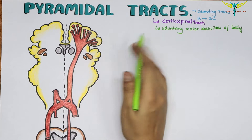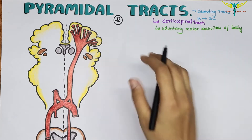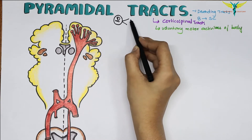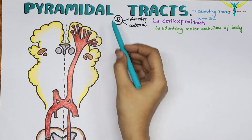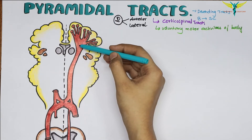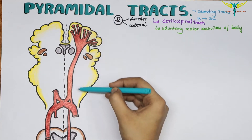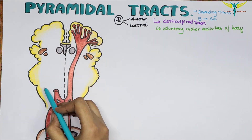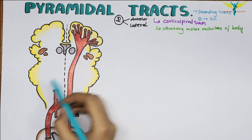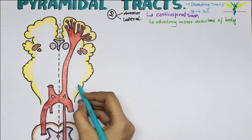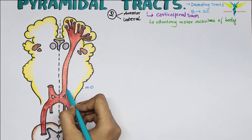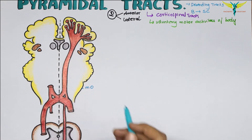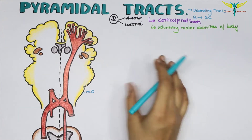There are two pyramidal tracts or corticospinal tracts: the anterior corticospinal tract and the lateral corticospinal tract. They are named pyramidal tracts because while running from the cerebral cortex towards the spinal cord, these two tracts give the appearance of a pyramid on the upper part of the anterior surface of the medulla oblongata. In the medulla oblongata, the anterior and lateral pyramidal tracts look like a pyramid.